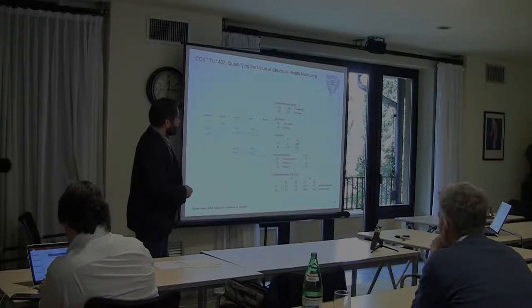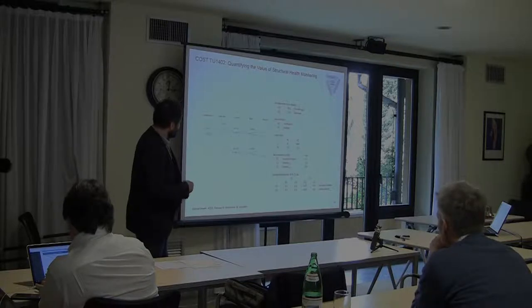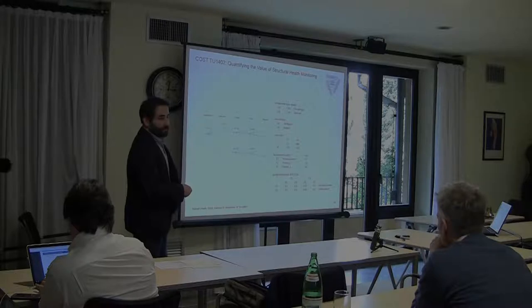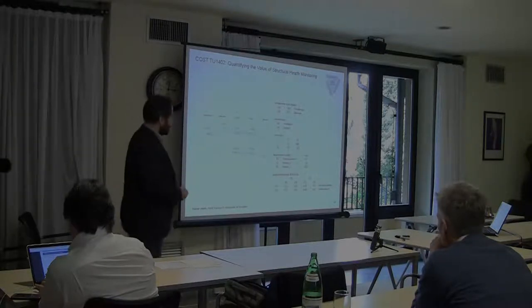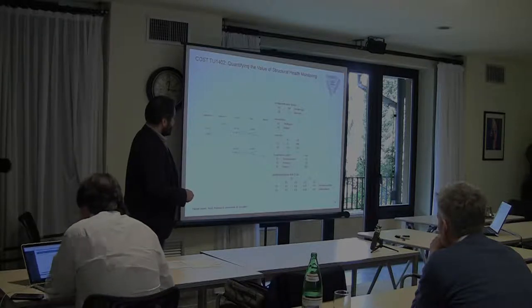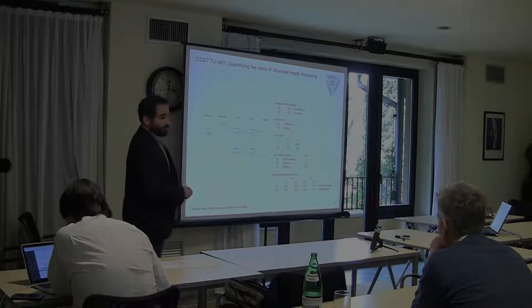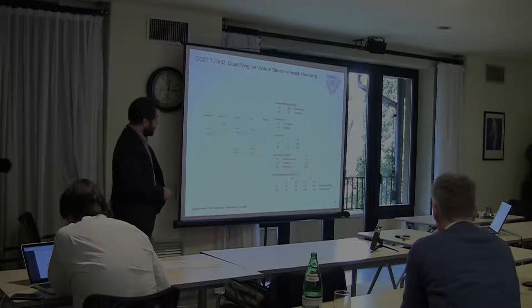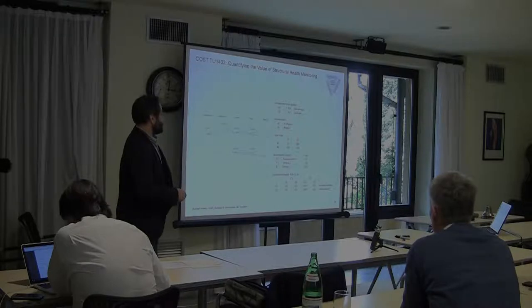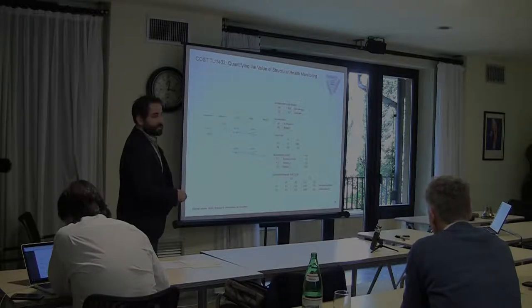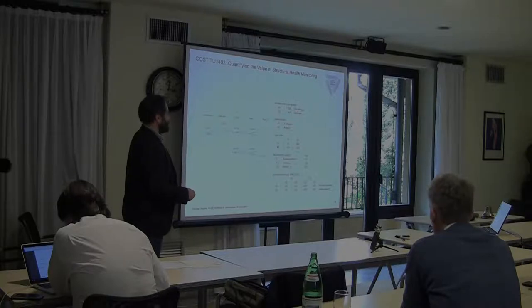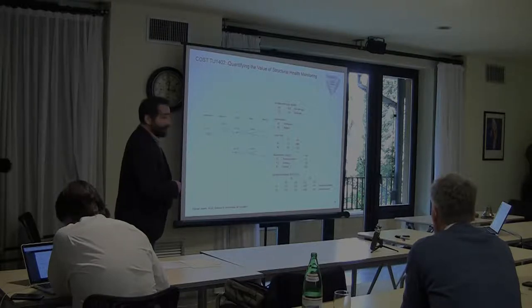We consider two types of actions and interventions: repair or no repair. We don't include all possible consequences, just to make it simple. The total cost is the cost of the intervention and the cost of a possible failure. If you have no damage and you don't repair, you don't pay anything. If you don't repair and it fails, you have to pay more. If you repair, that has a certain cost.